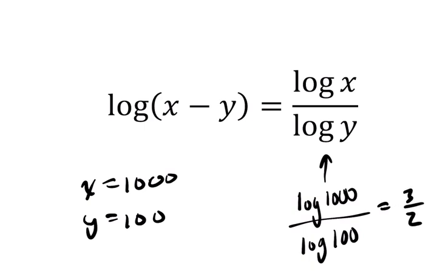On the left-hand side, we'd have the log of 1,000 minus 100 or 900. And if that's not 1 1⁄2, which is not going to be, because 10 to the 1 1⁄2 is not 900. 10 squared is 100, so 10 to the 1 1⁄2 is going to be less than that.